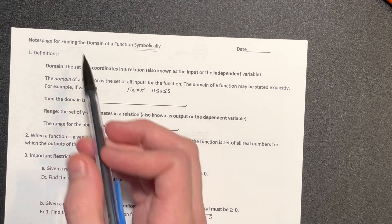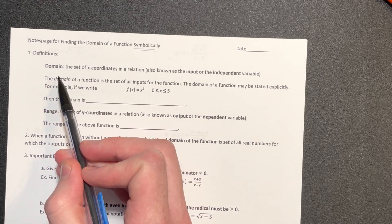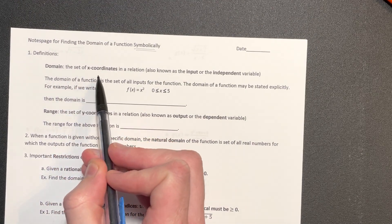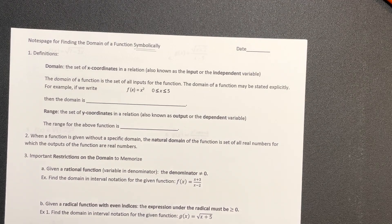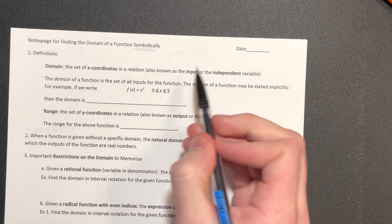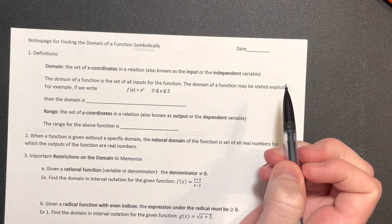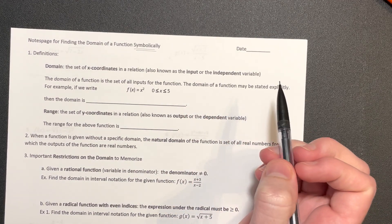To remind ourselves what the domain is: we have the set of x-coordinates in a relation. That's our input, our independent variable.